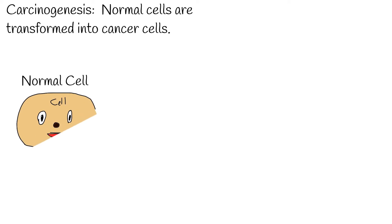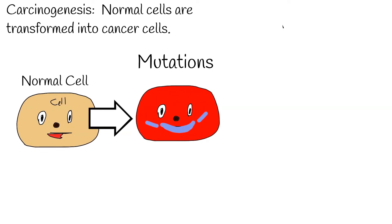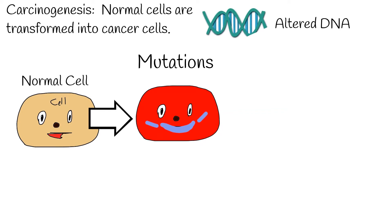Carcinogenesis is a complex process in which normal cells are transformed into cancer cells. Carcinogenesis would not happen without mutation. Mutation is an alteration in the genome of an organism. A single mutation is not enough to develop cancer; it requires several mutations in the genome.